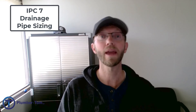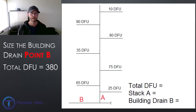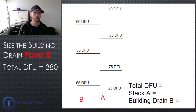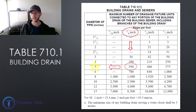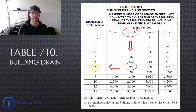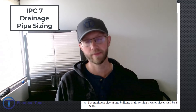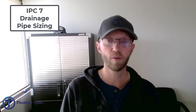Let's look at an example with a very large stack — more than three branch intervals. We total up the drainage fixture units from all the horizontal branches coming into the stack: 10 plus 90 plus 80 plus 35 plus 75 plus 65 plus 25, totaling 380 drainage fixture units. Now let's size the building drain at the bottom of that stack. Using table 710.1(1) with eighth inch per foot slope, we take our 380 DFU down that column: it's more than 36, more than 180, but less than 390. Coming to the left, the pipe size is 5 inch. Since 5 inch is not a common size, we round up to 6 inch pipe.